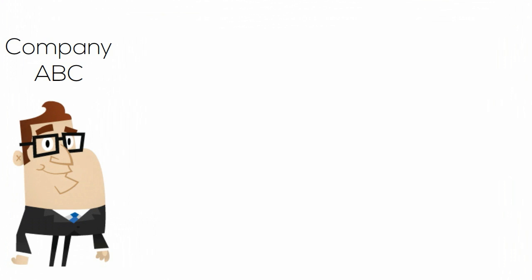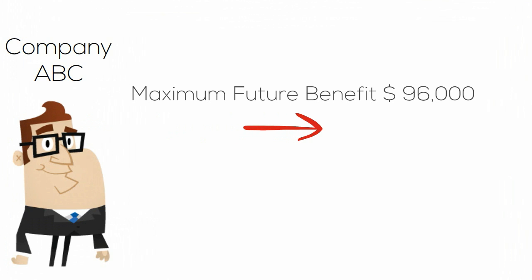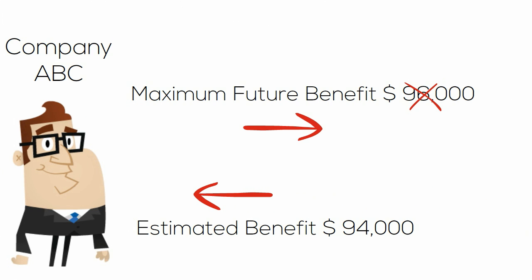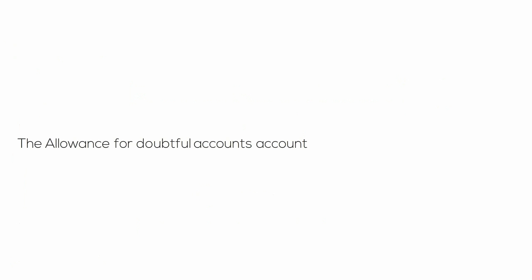Thus, management believes the probable future economic benefit of its $96,000 of accounts receivable is only $94,000, not $96,000. The Allowance for Doubtful Accounts account is a contra-asset account that management uses to better reflect what it believes the true asset value of its accounts receivable is.